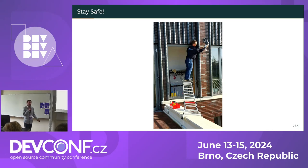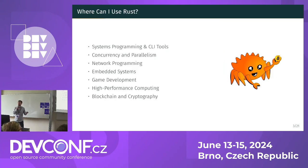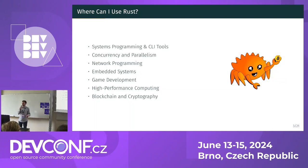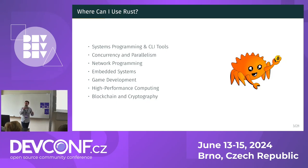In which fields can I apply Rust? In general, Rust is suitable for applications that are typically written in C or C++, such as systems, parallel, or network programming. It's also used in embedded systems, game development, and high-performance computing, notably in blockchain and cryptography, where Rust is among the top languages used.